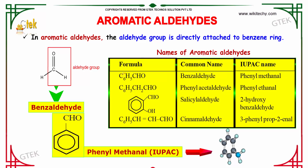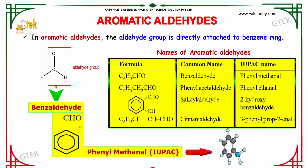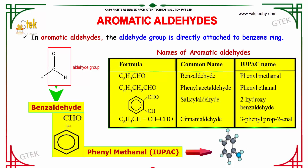Aromatic aldehydes are aldehydes in which the aldehyde group (CHO) is directly attached to the benzene ring. The CHO is the aldehyde group whereas the benzene is an aromatic ring. So when the CHO group is directly attached to the benzene ring, it is known as an aromatic aldehyde.